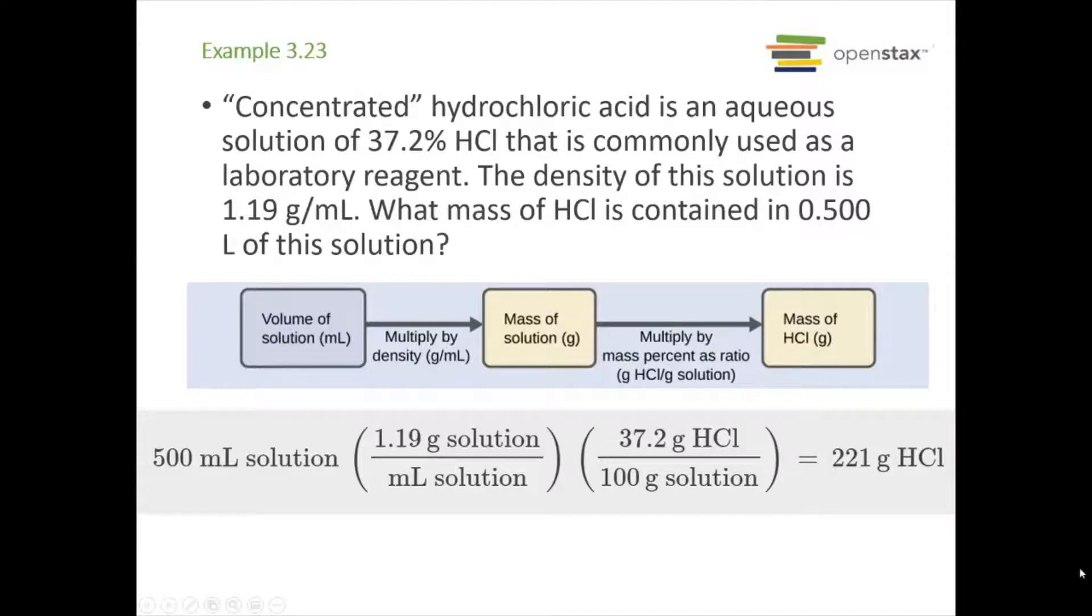So we're told, given a density of 1.19 grams per milliliter, we want to know the mass of HCl in 0.500 liters of this solution. We're looking at percent by mass, but we're given a volume, which then we're given a density. Remember chapter one, we can go from volume to mass using density. We have 500 milliliters, which is the same as 0.500 liters.